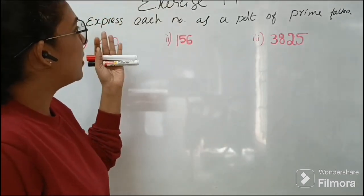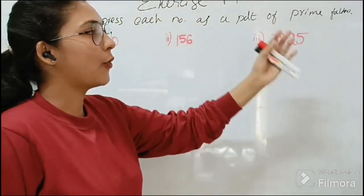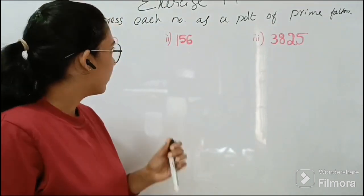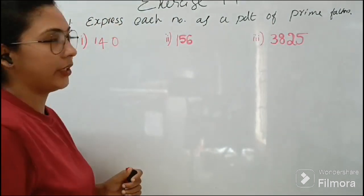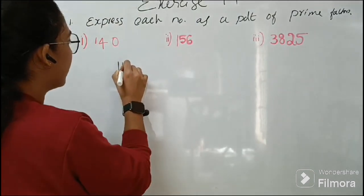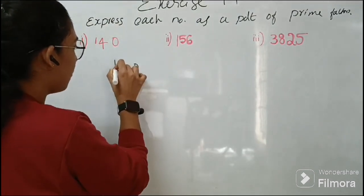So let's start here. First one is express each number as a product of prime factors. We discussed it in the first class. So here the first question is 140. So we have to factorize this number, that is 140.